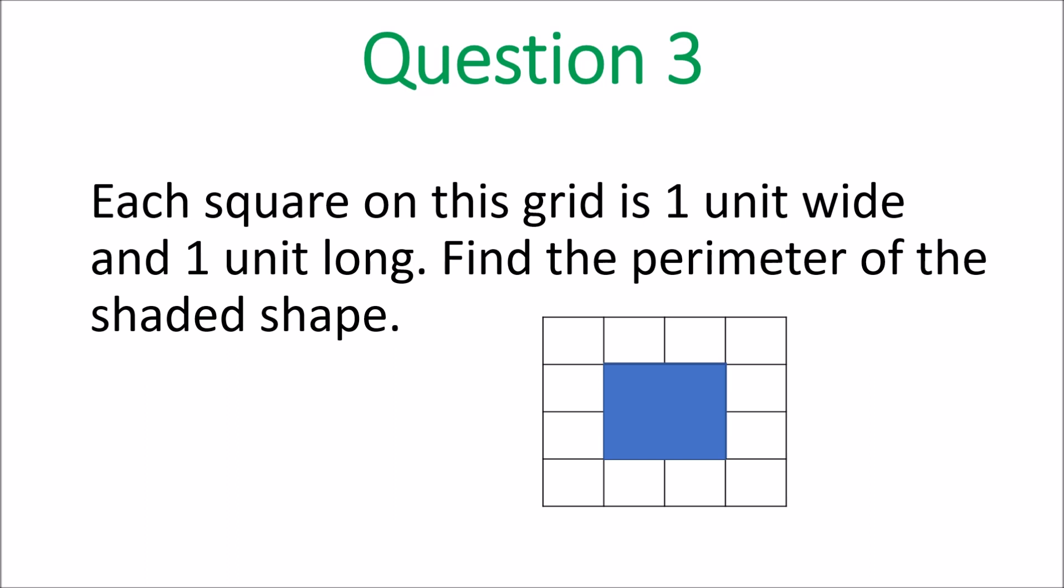Question 3. Each square on this grid is 1 unit wide and 1 unit long. Find the perimeter of the shaded shape.